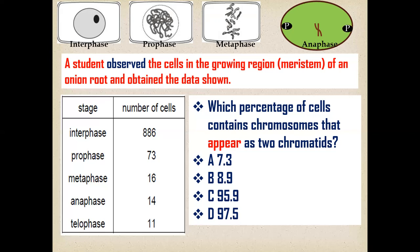In anaphase, these chromatids will separate from each other. If the chromatids are separating from each other, then these chromosomes will not appear in the form of chromatid. So in this way we will exclude these two stages: interphase and anaphase.